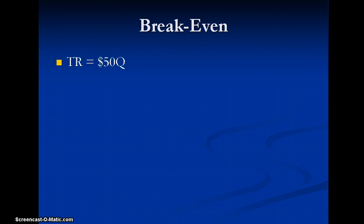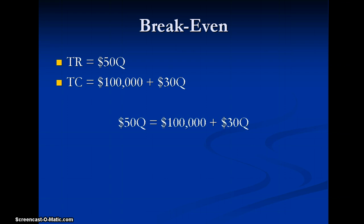So what we're going to do here, we have our total revenue equals 50 dollars times the amount that we make. Our total cost is $100,000 plus $30 times the quantity we make. So we're going to set the total revenue equal to total cost. We'll move all of our Qs to the left and we would get an answer of Q equals 50,000. So this tells us if our volume is 50,000 or more, we'll make profit. If it's under 50,000, we'll lose money.